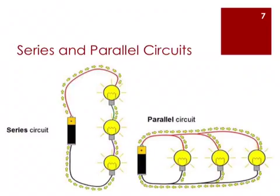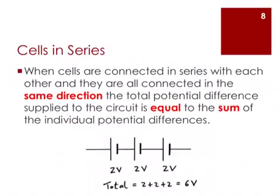The diagram below shows a series connection of light bulbs on the left versus a parallel connection of light bulbs on the right. When the light bulbs are connected in series, current passes through the light bulbs one after the other, whereas in a parallel connection, current splits into different branches. When cells are connected in series with each other and they are all connected in the same direction, the total potential difference applied to the circuit is equal to the sum of the individual potential differences.